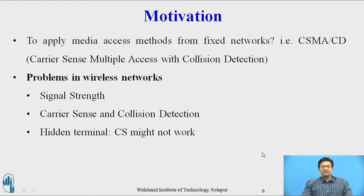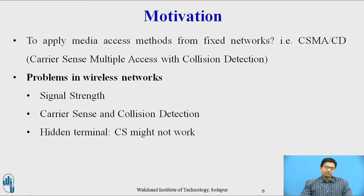The motivation comes from fixed networks. In fixed networks, CSMA/CD (Carrier Sense Multiple Access with Collision Detection) was used. When we apply this technique in wireless networks, there are some problems. In wireless networks, we use air as the transmission medium, so signal strength decreases proportionally to the square of the distance between sender and receiver. When a sender applies carrier sense and collision detection, if a collision happens at the receiver, the sender might not hear this collision. Therefore, collision detection does not work in wireless networks when we apply CSMA/CD.